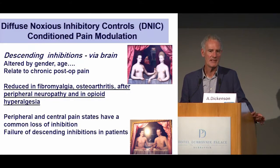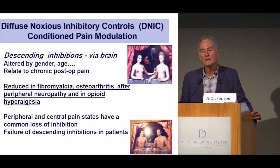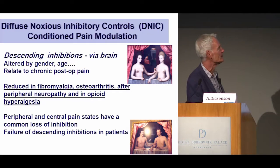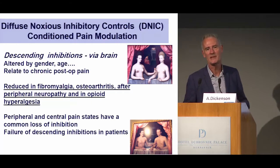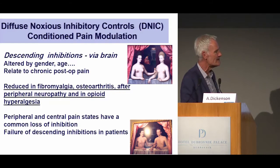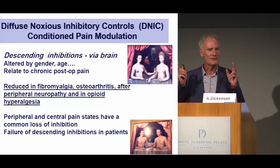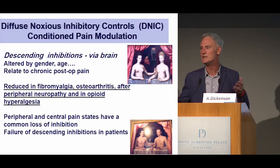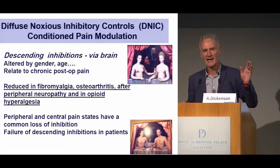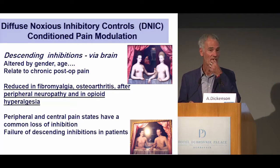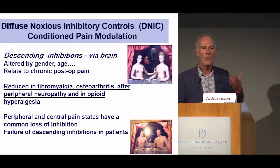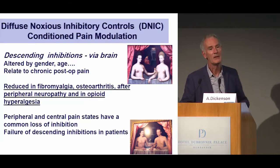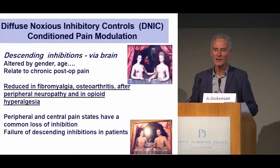What about descending inhibition? Without putting somebody in a scanner, you can actually gauge descending inhibition in humans — one pain inhibits another. This is a well-known phenomenon: 96% of normal humans show that one pain inhibits another, giving around 30% inhibition. When you go into chronic pain states, including osteoarthritis, one pain inhibiting another fails. So this is a loss of inhibition.